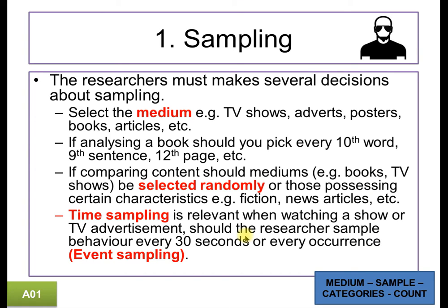Sampling is key when you're carrying out content analysis. You select your medium — are we looking at TV shows, adverts, Facebook, Twitter, articles, books? Once you decide that, should you read the whole thing or should you actually select a more systematic way of analyzing it? If you're looking at a book, should you pick every 10th word, 9th sentence, 12th page? This can be very important if the medium is particularly large, as in the case of Twitter.